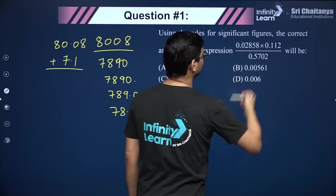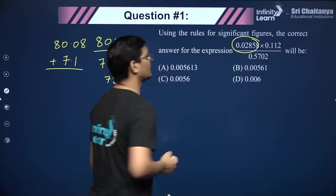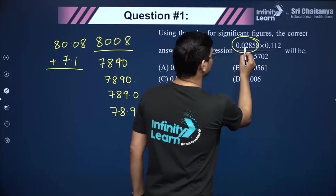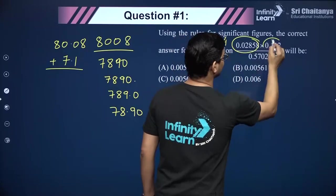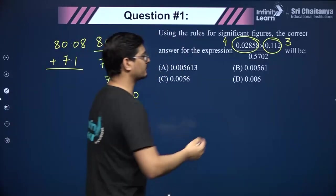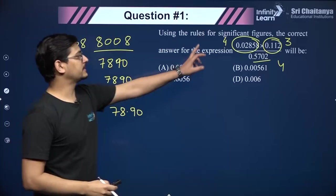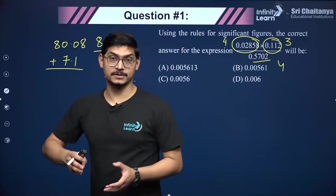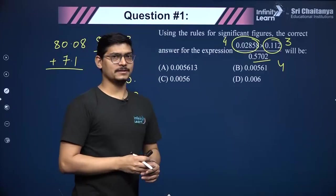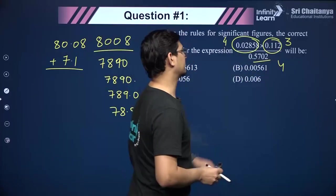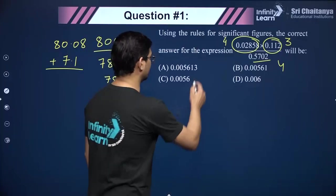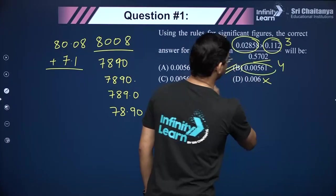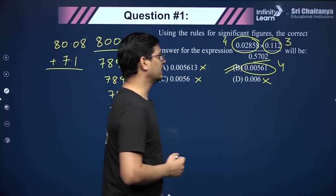In multiplication and division, we look at the total number of significant figures in every number. Starting zeros are never significant. In this expression, one number has four significant figures, one has three, and one has four. The rule says the final result should have as many significant figures as the number with the least significant figures, which is three here. So the correct answer is the option showing exactly three significant figures.